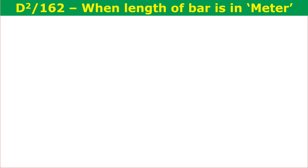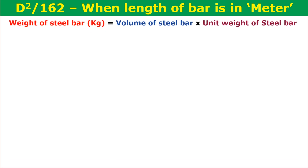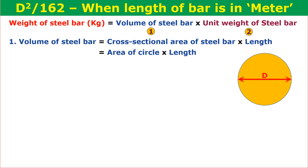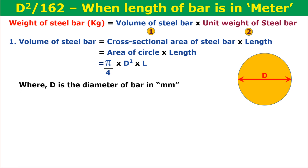Now let us see the derivation for d² by 162 when the length of the bar is given in meters. The weight of a steel bar in kilograms is equal to the volume of the steel bar multiplied by the unit weight of the steel bar. There are two components: the volume of the steel bar and the unit weight of the steel bar. The volume of steel bar equals the cross-sectional area multiplied by the length, which is the area of a circle multiplied by the length. The area of a circle is π by 4 times d², where d is the diameter of the bar in mm and l is the unit length of the steel bar in mm.